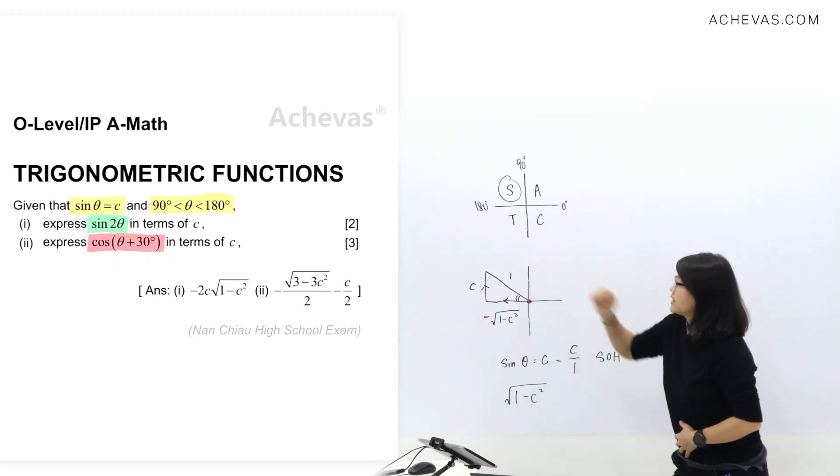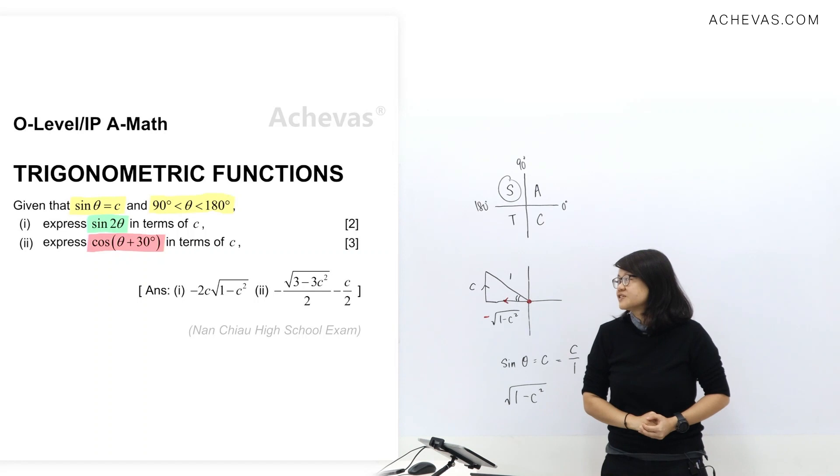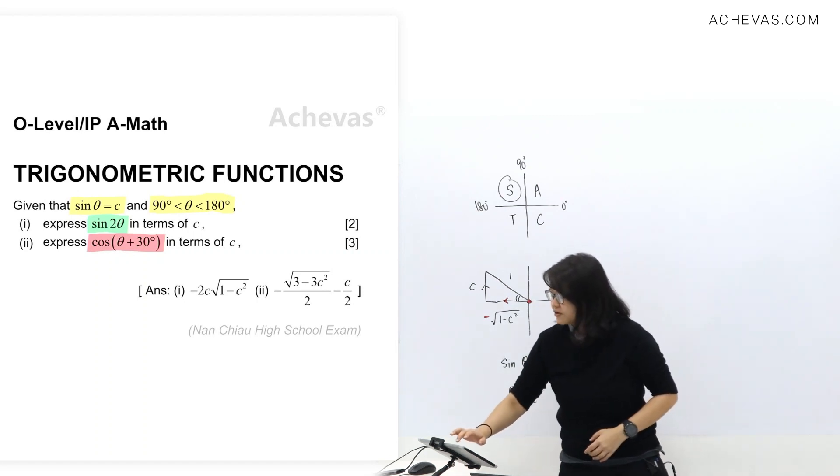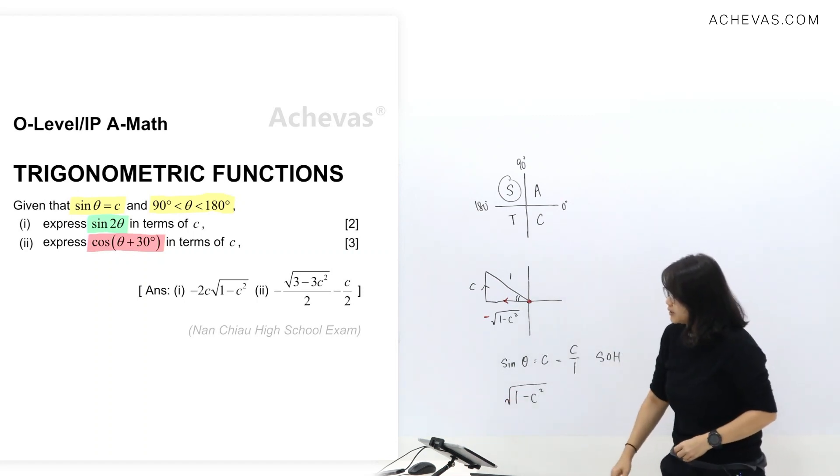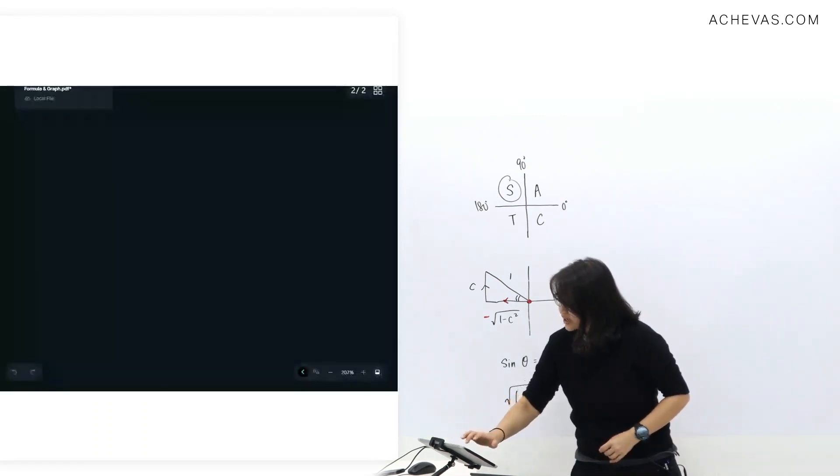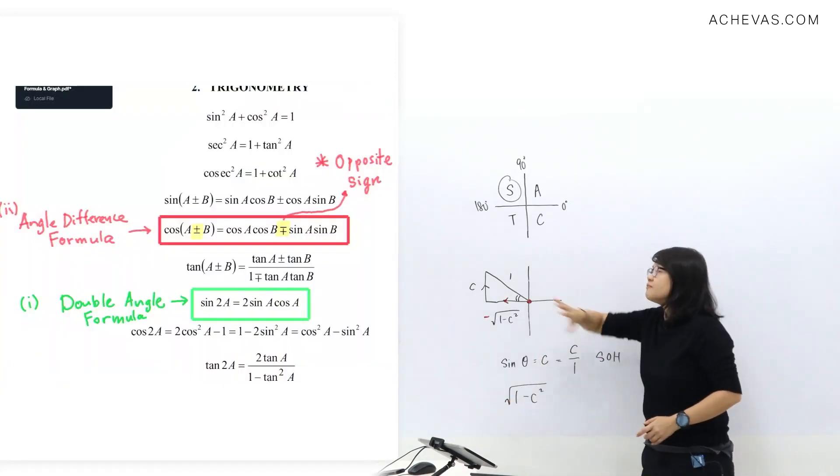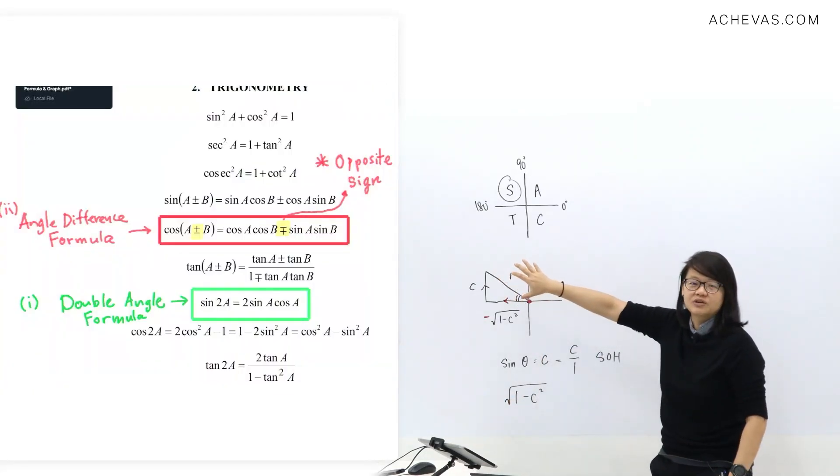Now let's take a look at the question. We need to express sine 2 theta in terms of c and cos theta plus 30 in terms of c. Now take note that this one is something you can refer to in the formula page. Let's take a look at this two here.